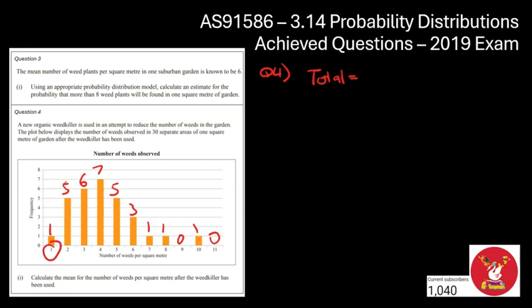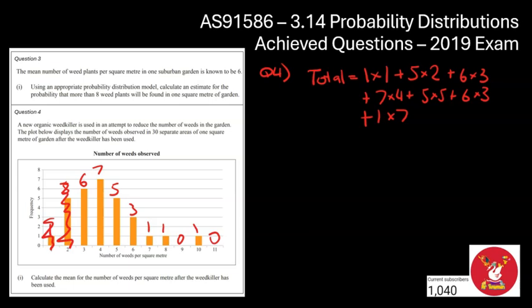So our total, let's start off, is going to be 1 times 1, which represents this bar, and then we're going to add on 5 times 2, which represents this bar, and we're going to repeat this process. So we're going to go 6 times 3, we're then going to add on 7 times 4, we're then going to add on 5 times 5, and then 3 times 6, and then 1 times 7, and then 1 times 8, and then finally 1 times the 10. So that's all my total, and if you do all that math, hopefully you're getting the same as me, 125 weeds in total.